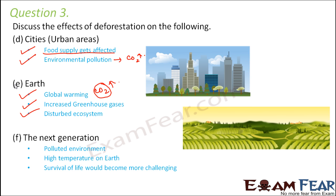Effects on the next generation: if we cut down all the trees, nothing will be left for future generations. In the coming years, the environment will get completely polluted due to increased carbon dioxide levels. The temperature of the earth will also increase due to global warming, and survival of life will become more challenging because as the environment becomes less suitable, survival of living organisms will become more difficult.